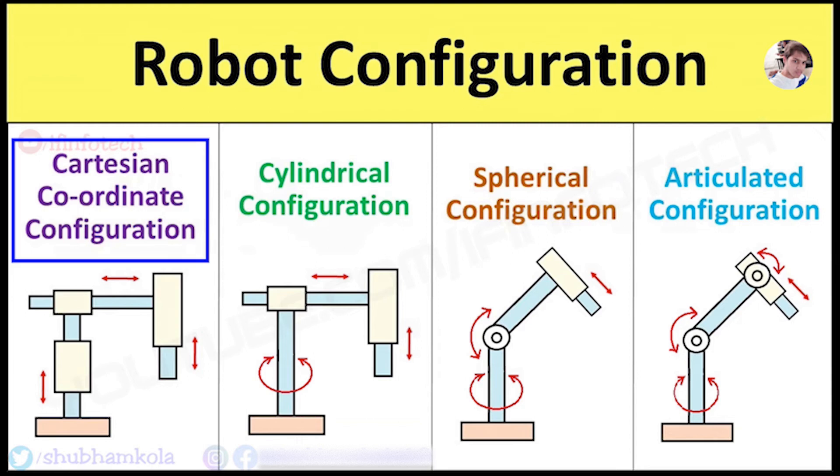The first one is Cartesian Coordinate Configuration. Here I have drawn the sketch of Gantry Robot, also called Rectangular Robot. It is the simplest configuration with 3 prismatic joints. The robot functions in rectangular workspace by means of these 3 joint movements.